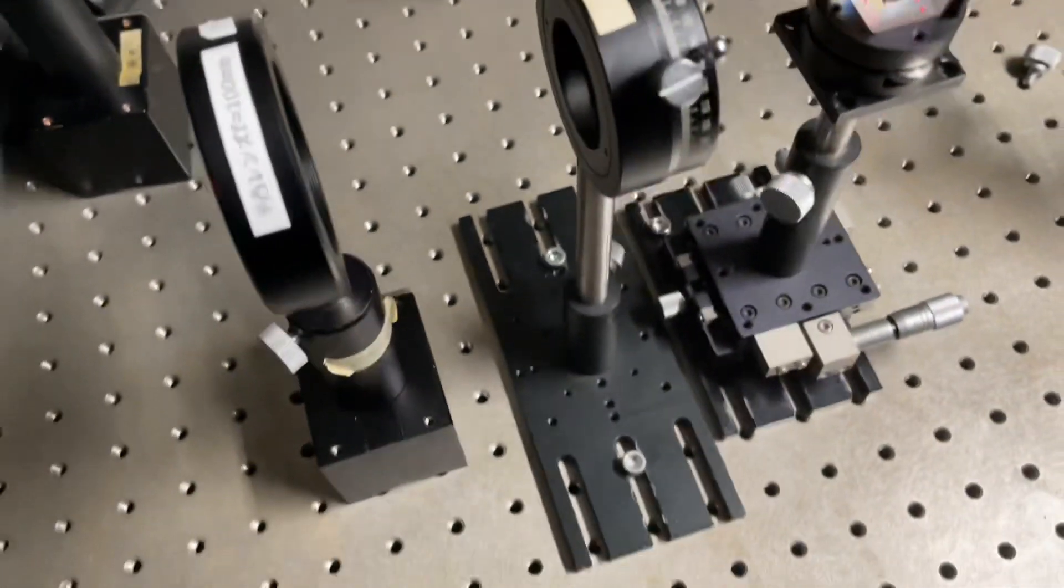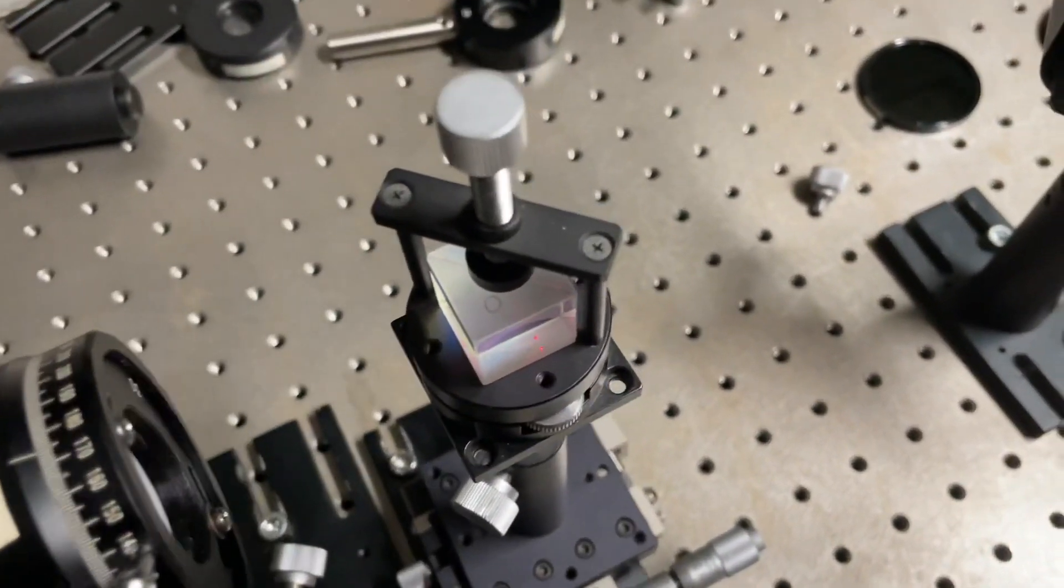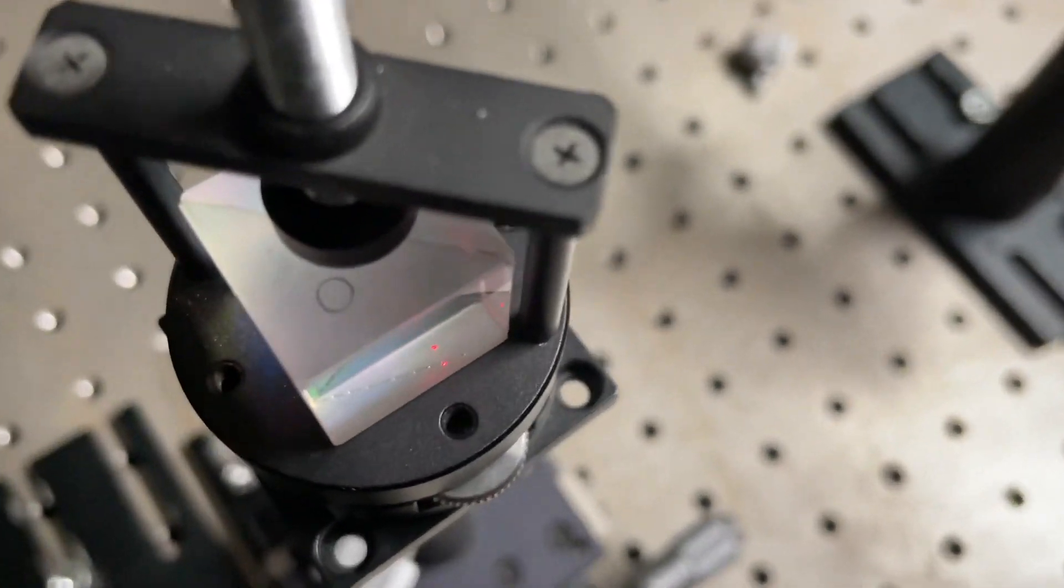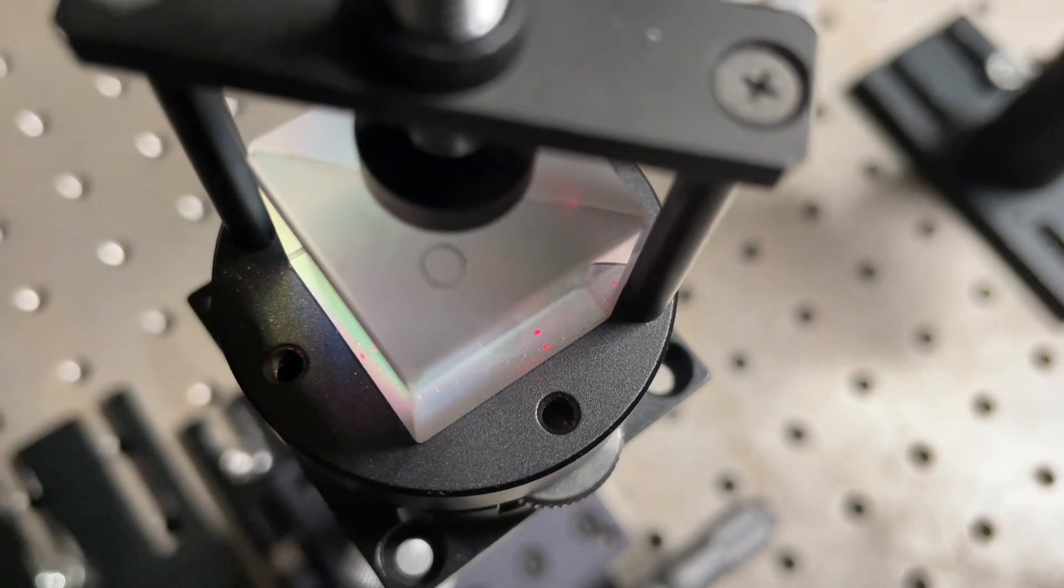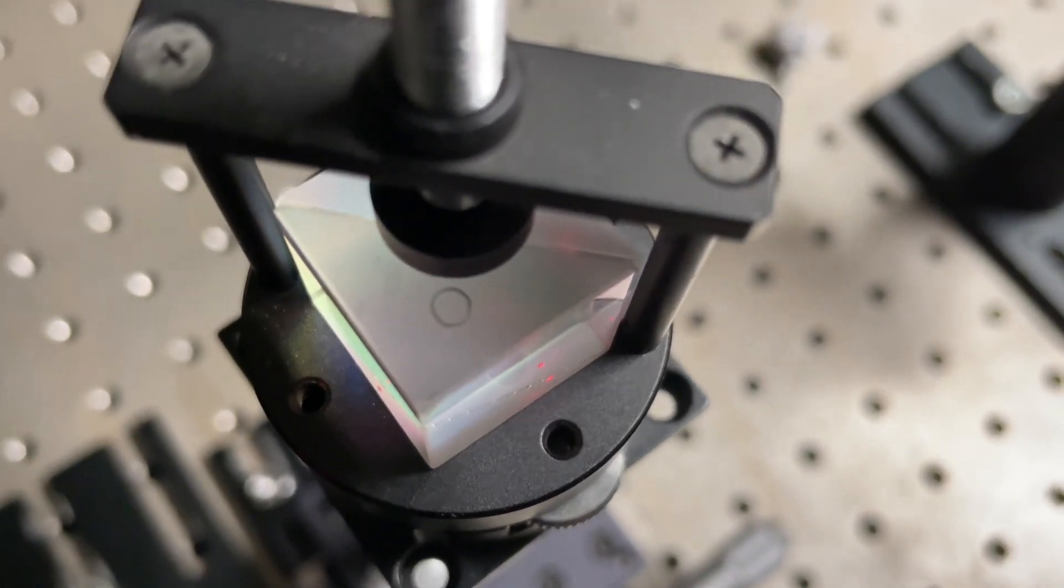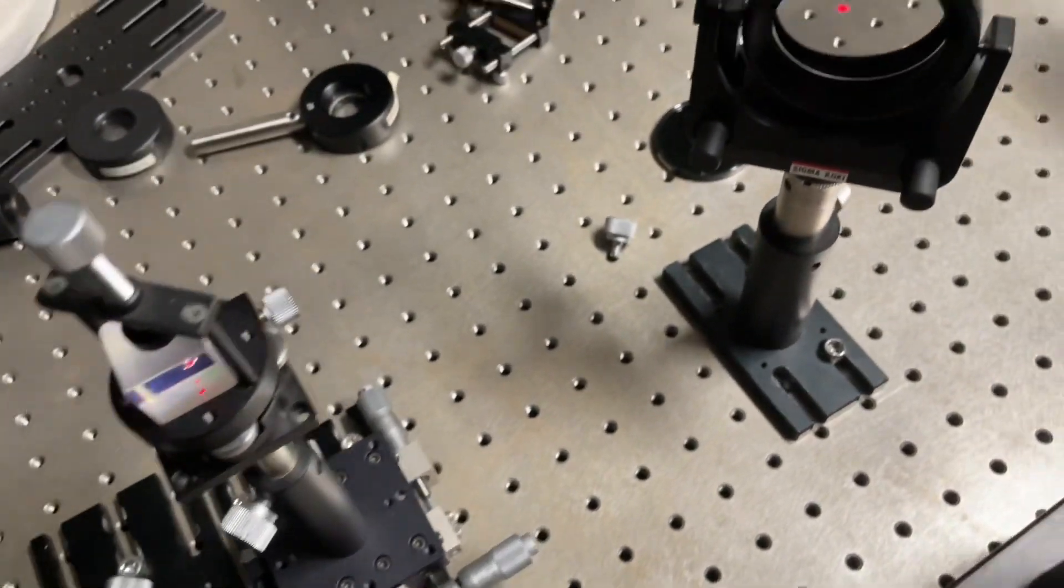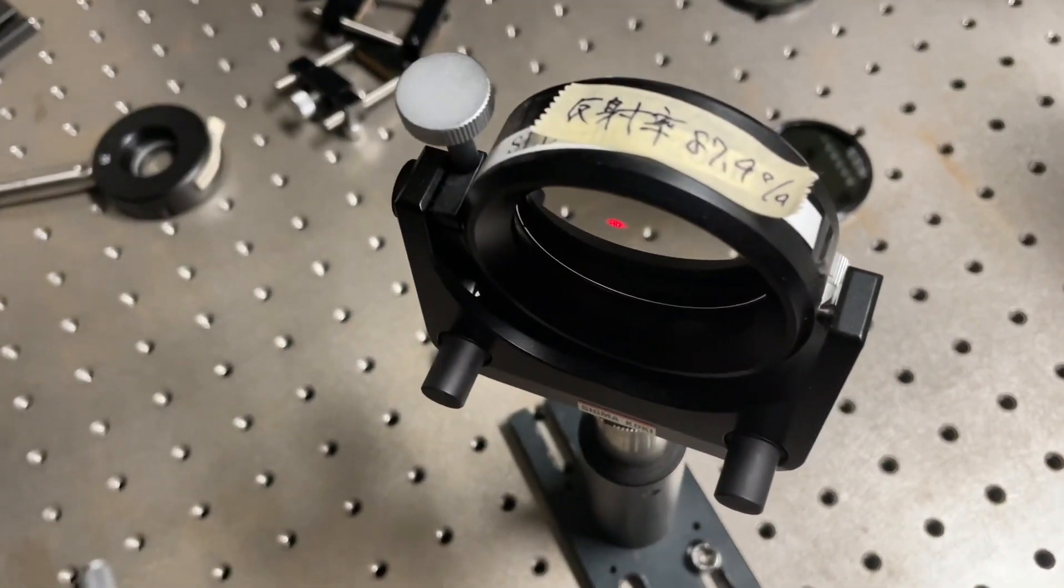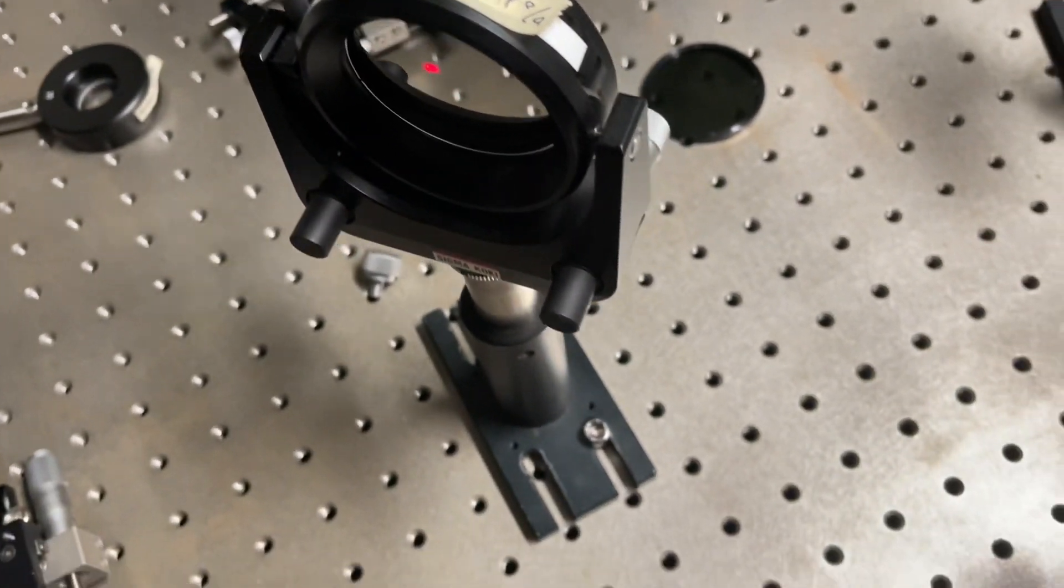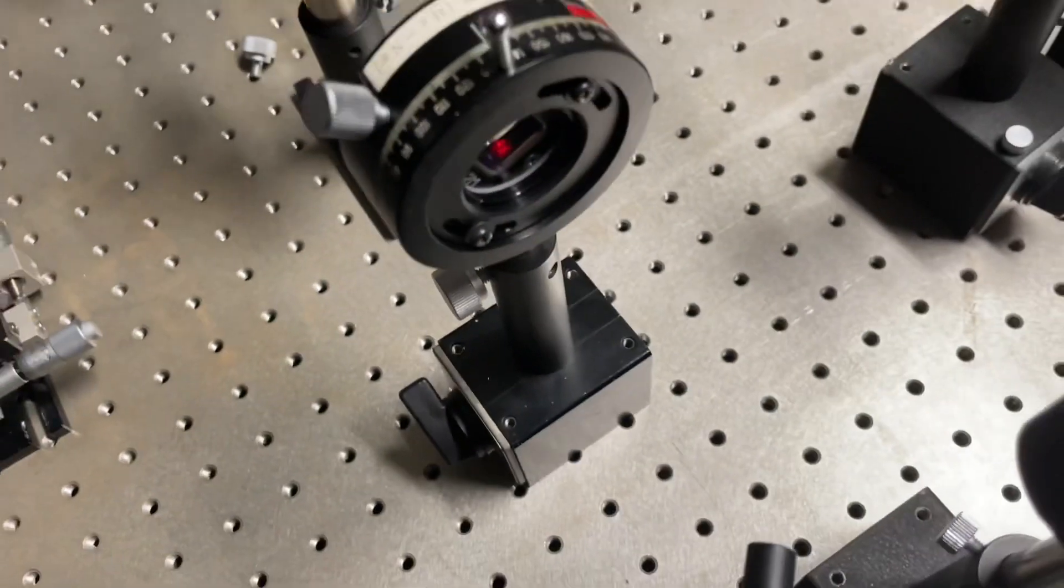After that, we have a polarizing beam splitter. You can see this circle on the beam splitter - this indicates that it is a polarizing beam splitter. If we go ahead, this is a mirror oriented to 45 degrees, and on the right there is another half-wave plate.